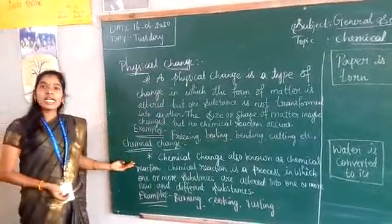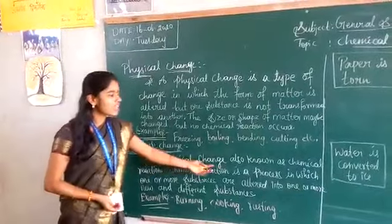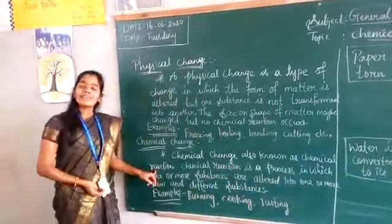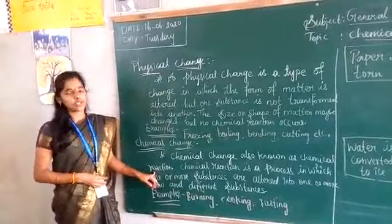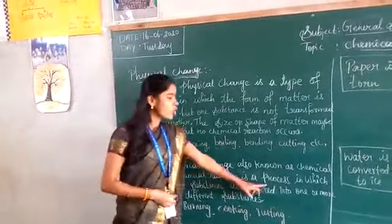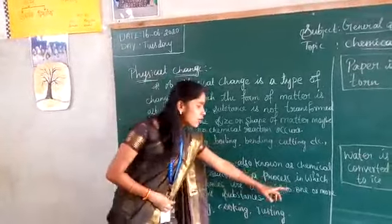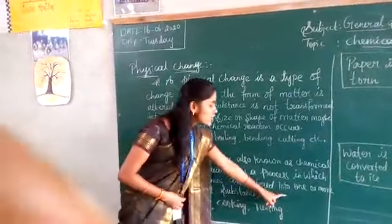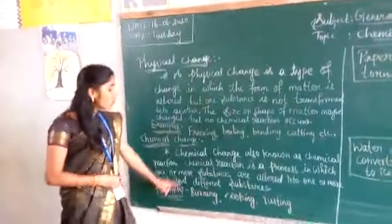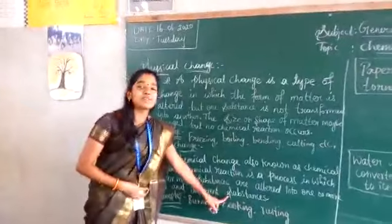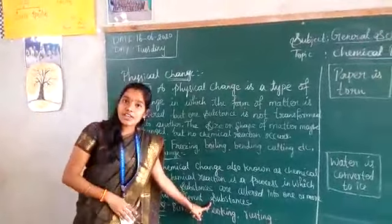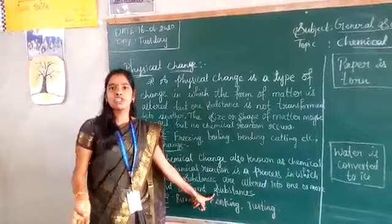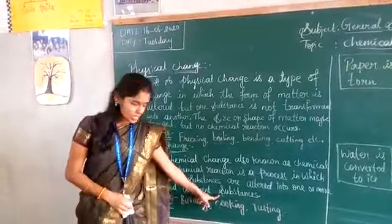Next, chemical change — also known as chemical reaction. A chemical reaction is a process in which one or more substances are altered into one or more new and different substances. In the case of a chemical reaction, entirely new or different substances are formed.